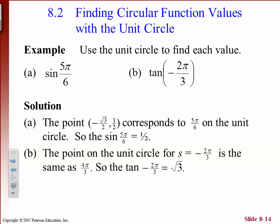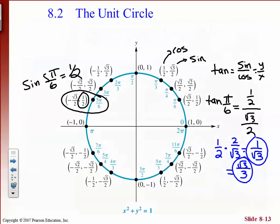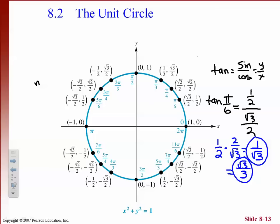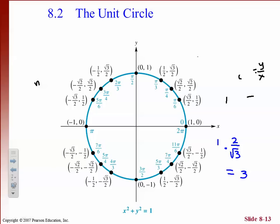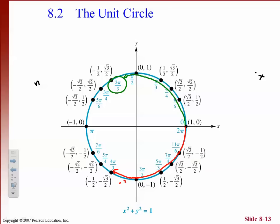For tangent of negative 2 pi over 3: let's first find positive 2 pi over 3, which is up here on the circle. Negative 2 pi over 3 means we go the other way around the circle the same distance, which ends up at the same spot as 4 pi over 3.